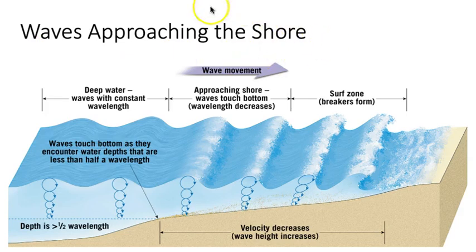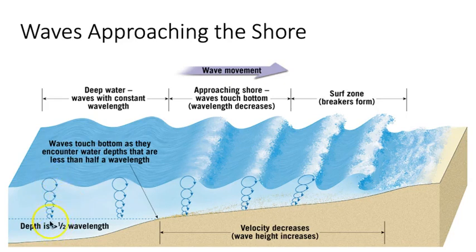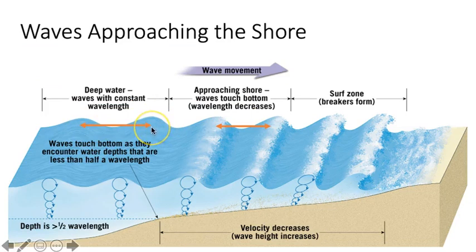Waves are simply the physical expression of energy moving through water. The source of this energy is wind, which blowing across the water far offshore for a long enough period of time will generate groups of waves. A wave passing through water will cause the water to move in a circular path, not only at the surface, but down to a depth of about half a wavelength — the wavelength being the distance from the peak of one wave to the peak of another.